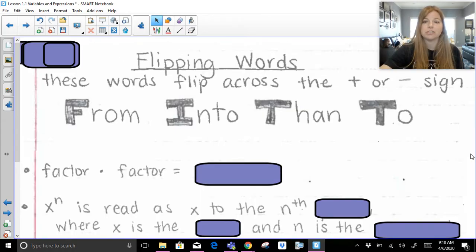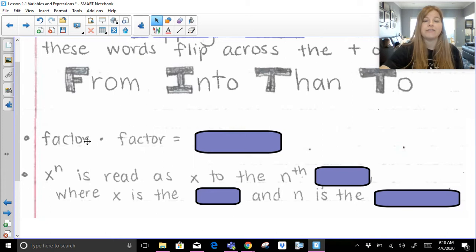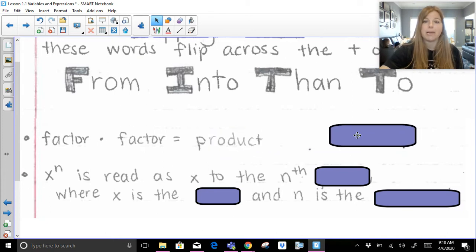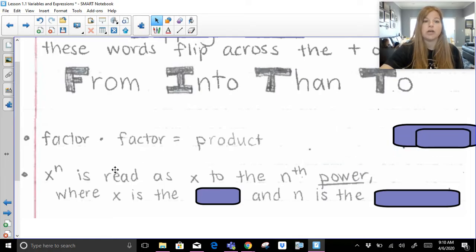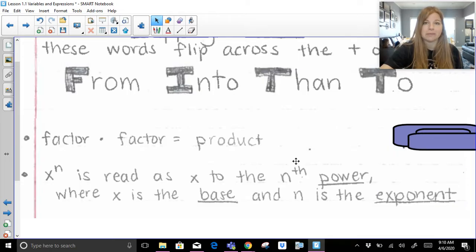A couple other terminology things that we need to make sure we know: a factor times a factor is a product. Factors multiply to get the result, which is called the product. And if we see this, this is read as x to the nth power. So if I have x and then a little 4 here, that would be x to the fourth power, where x is the base and n is the exponent.